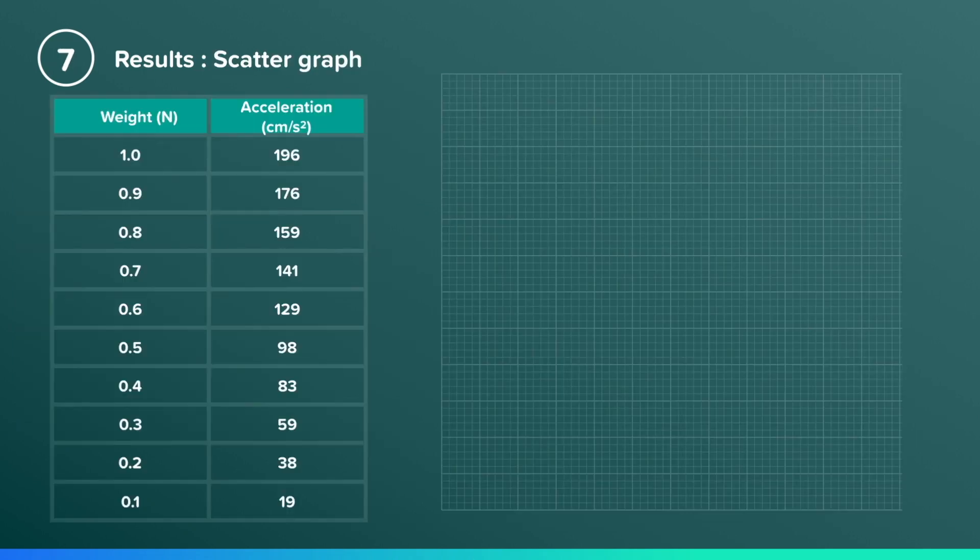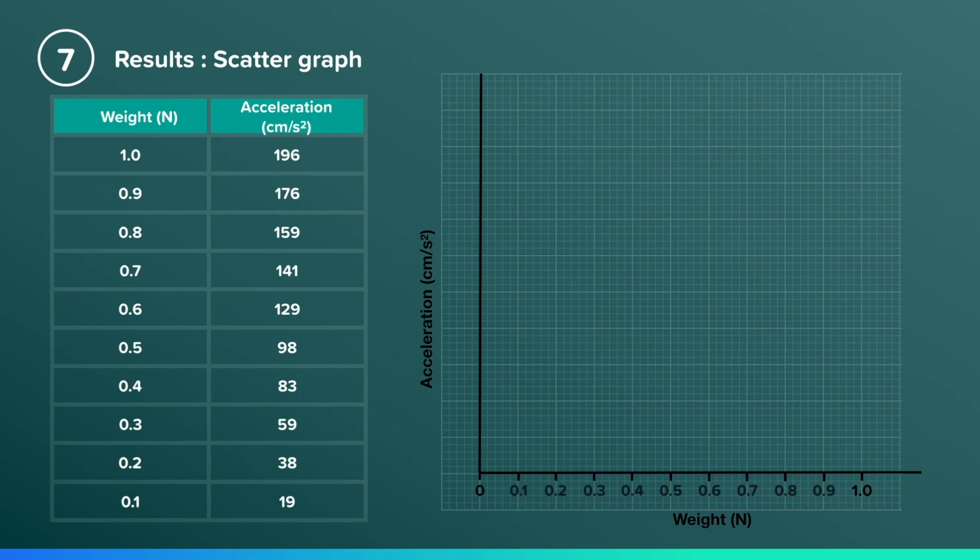To look at the relationship between the weight and the acceleration, we're going to be plotting a graph. Weight is on the x-axis, and acceleration is on the y-axis. Make sure your scale allows you to plot all data points. Plot your data points as a scatter graph, and then add a line of best fit.